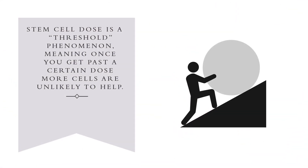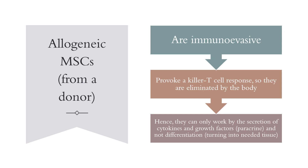A stem cell dose is a threshold phenomenon, meaning that in general, once you get past a certain dose, more cells are unlikely to help. There are two major stem cell types: allogeneic, which is from a donor, and autologous, from your own body. Allogeneic MSCs are immuno-evasive, so they can evade part of the immune system, but eventually they get caught by the cellular immune response — the killer T response — and are eliminated. Hence, they're only going to work for a short time through paracrine forces: cytokines and growth factors, not differentiation, meaning they can't turn into the needed tissue type.